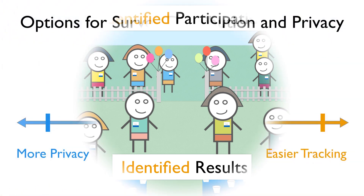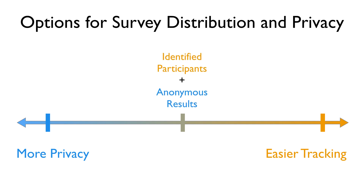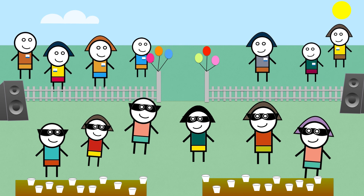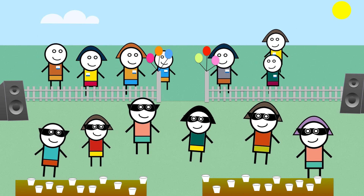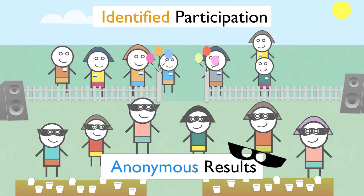In between these two extremes, the option of distributing your survey with individual email links but keeping these responses anonymous in the data — this would be like having a costume party with RSVPs. You know that certain people are in the room, but you can't figure out who any one person actually is. This option for surveys allows you to identify that a particular person is one of the participants, but won't let you associate their name with any of the particular data points.